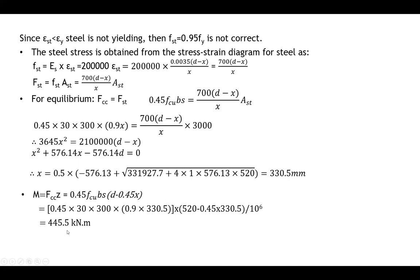Once we increase the area of steel reinforcement, the capacity of the section increases compared to section one. However, this section, if it fails, will fail in compression, which is not recommended by the code. So don't increase reinforcement just to increase capacity without ensuring the section will not fail in compression and remains under-reinforced. Otherwise the failure will be a catastrophic failure without any warning.